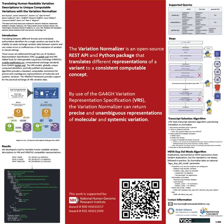The Variation Normalizer works in four main steps: tokenization, classification, validation, and translation.